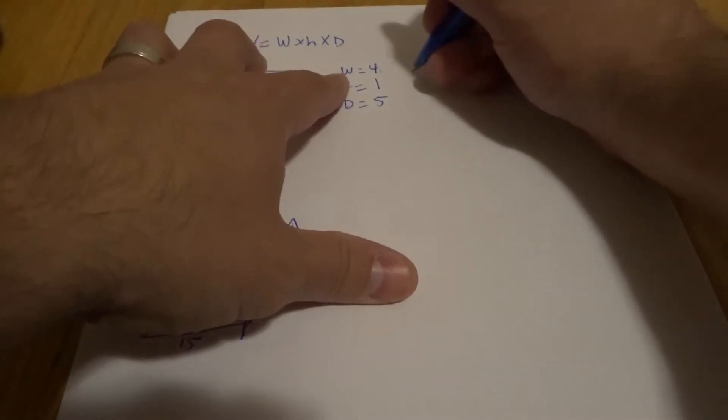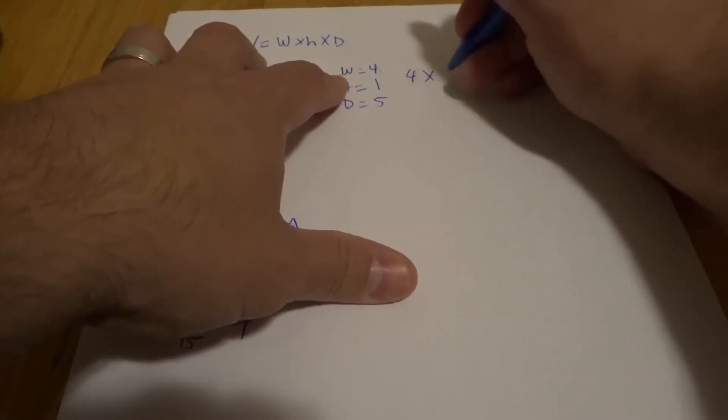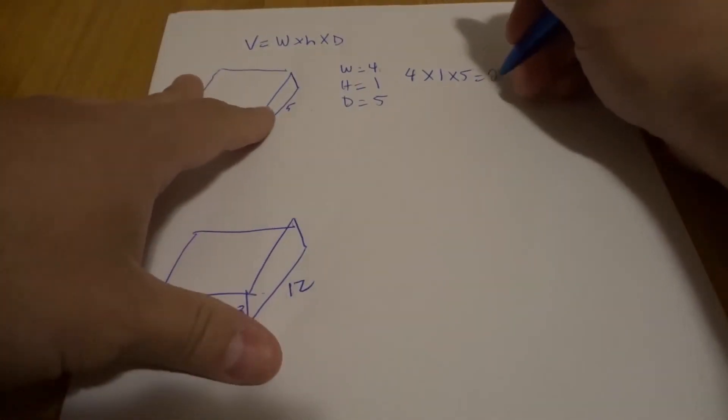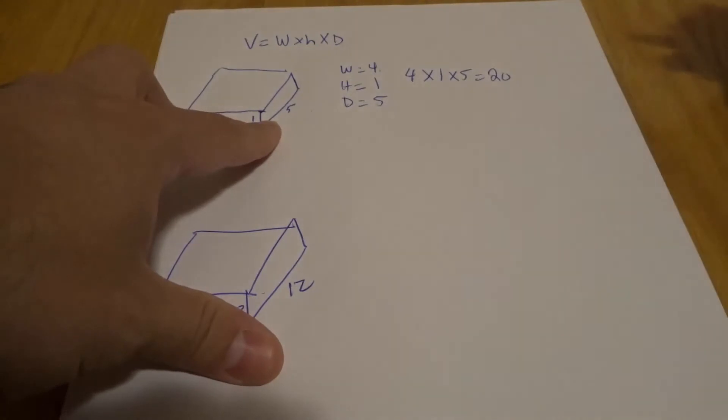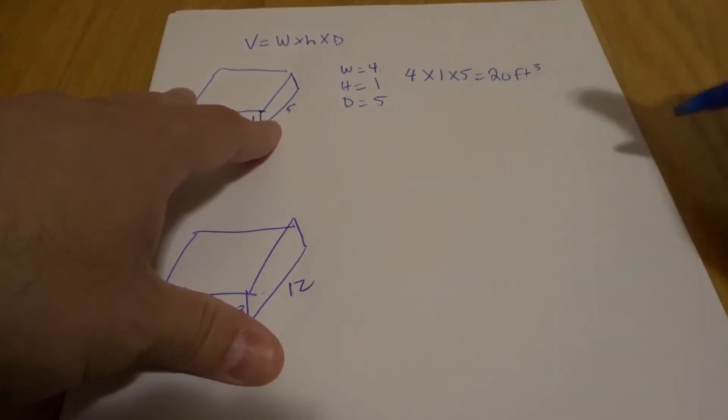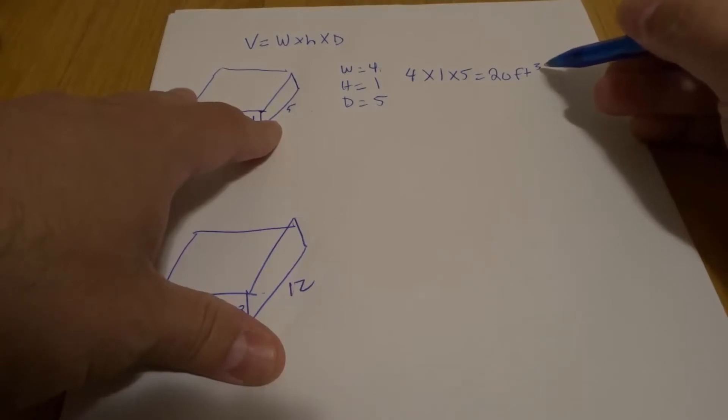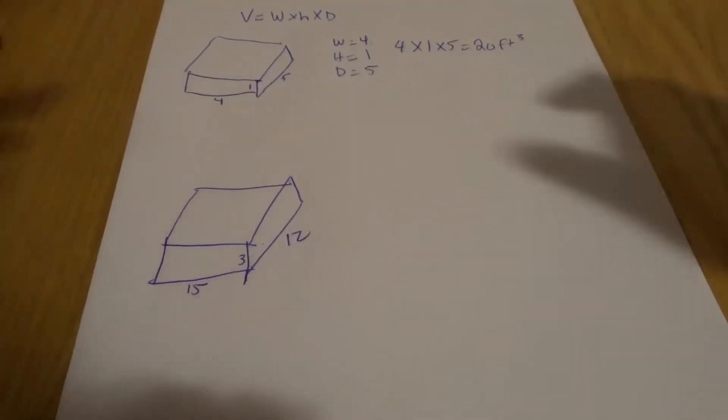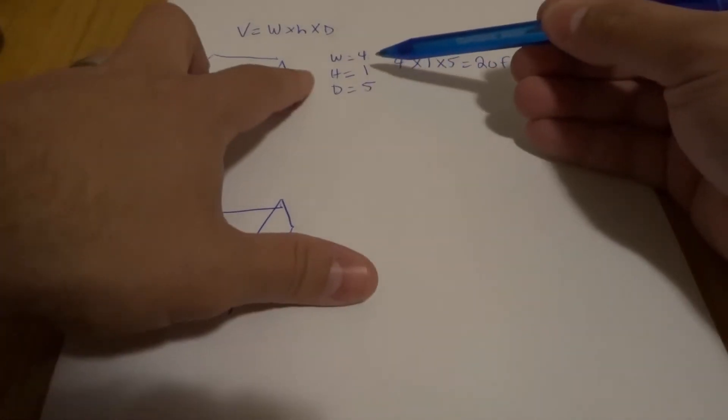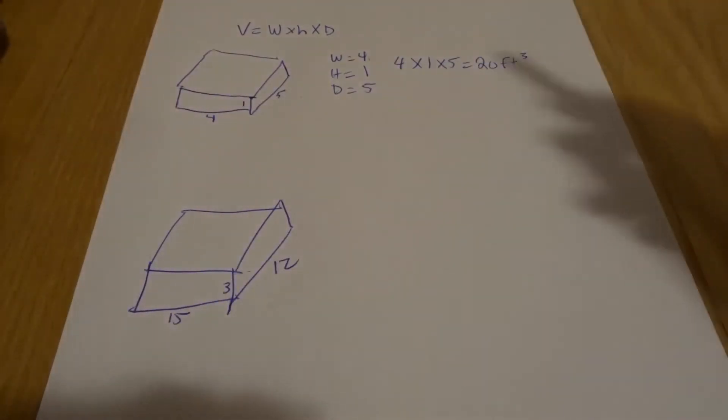So what we have here is four times one times five. When we multiply all of those numbers together, we're going to get 20. And this is already measured in feet, so this would be 20 feet cubed. We put a little three on the top right there to signify cubed. So that's what you do if it's already in feet - you just multiply your width, your height, and your depth. Very easy to do.